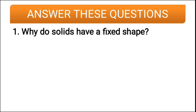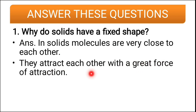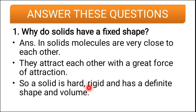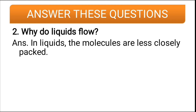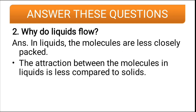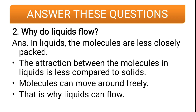Now long answers. Why do solids have a fixed shape? In solids, molecules are very close to each other and attract each other with a great force of attraction, so solids are hard, rigid, and have a definite shape and volume. Why do liquids flow? In liquids, the molecules are less closely packed, the attraction between molecules is less compared to solids, and molecules can move around freely. That is why liquids can flow.